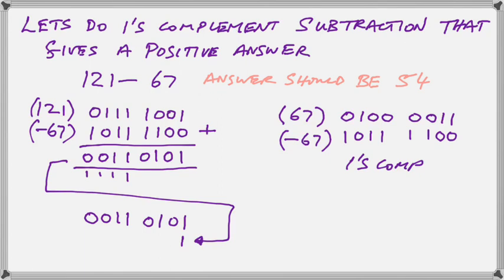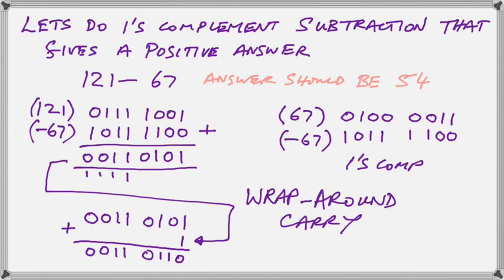We can't discard it like we did with the 2's complement. This is called a wrap-around carry. So we take that carry and we wrap it around to the lowest bit position, the least significant bit, which is on the right, and we add it to get our final answer. And when we add that 1 into our final result, we get the correct 54 that we were expecting.